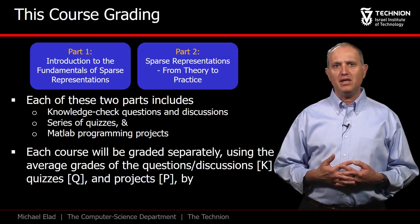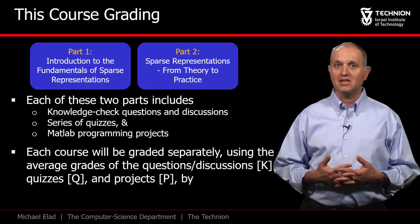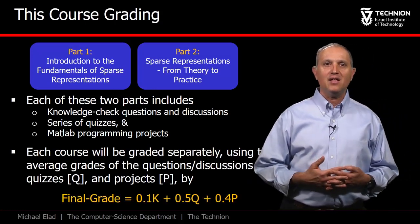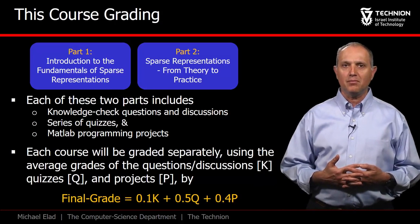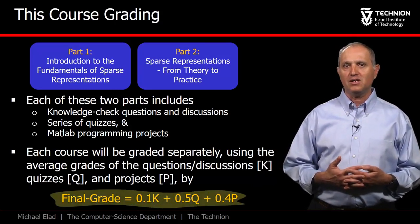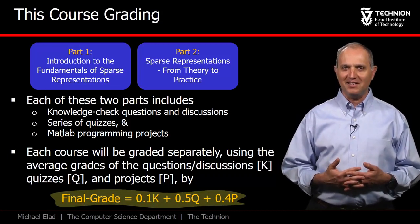Your grades will be based on your average performance in the questions and discussions marked as K, the average performance on the quizzes marked as Q, and the average grade of the projects marked as P. The final grade will be computed by this formula, assigning 10% to K, 50% to Q, and 40% to P.